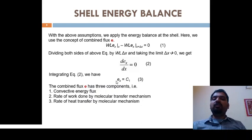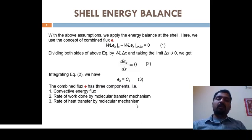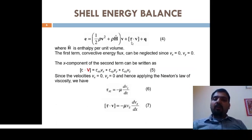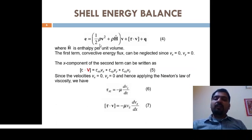The term e includes the convective energy flux, rate of work done by molecular transfer mechanism, and rate of heat transfer by molecular mechanism. The combined energy flux equals the sum of the kinetic energy and internal enthalpy term, plus the shear stress multiplied by velocity (work done), plus heat conduction. The convective energy flux term — (1/2)ρv² + ρĥ multiplied by v — is neglected because the velocity components in the x and y directions are zero.